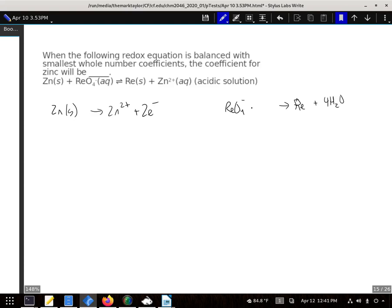That created eight hydrogens, so we're going to have to add eight H pluses. All right, we have that one negative and those eight positives to give seven positives altogether over here, and there's no charges over here, so we need to add seven electrons.